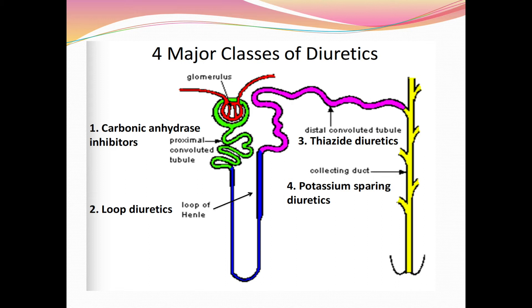So, the four major classes of diuretics are: carbonic anhydrase inhibitors, loop diuretics, thiazide diuretics, and potassium-sparing diuretics.